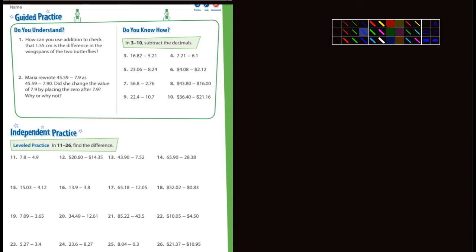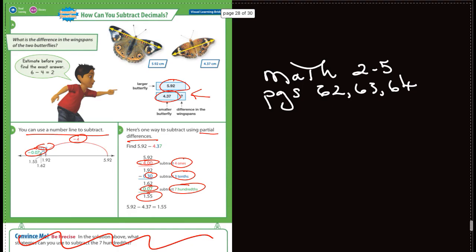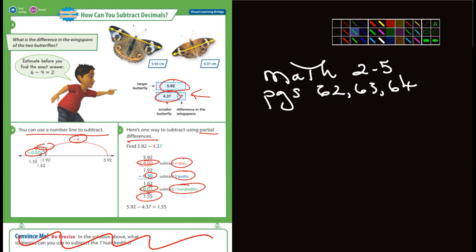But let's look at the guided practice here. Number one: how can you use addition to check that 1.55 centimeters is the difference between the wingspans of the two butterflies? Well, let's look at that again. The larger one is 5.92 centimeters, and we were subtracting 4.37, and we got 1.55.